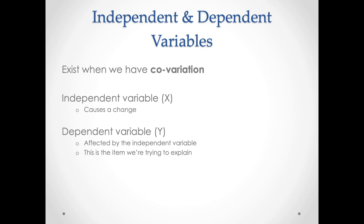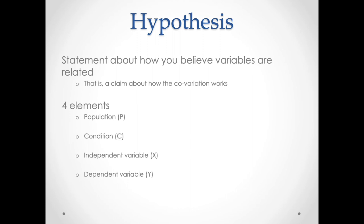The core idea is that we're thinking about co-variation between two factors and how one of them might explain the other. The way we do this is almost always to construct a hypothesis. In the next lecture, I'll talk about what a hypothesis is, how we generate one, and how we test or evaluate it — including turning our variables into something we actually measure.